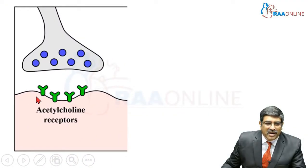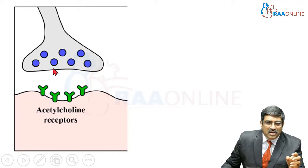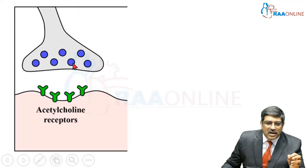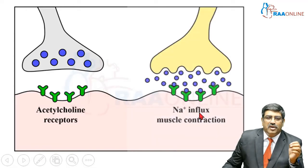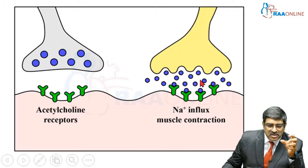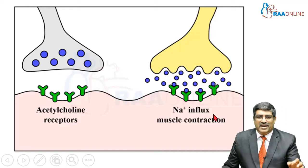This is the nerve fiber ending and this is the muscle membrane. The blue one is the acetylcholine which is released from the nerve fiber end, and the green one is the acetylcholine receptor. This acetylcholine has to be released and combined with the receptor for muscle contraction to happen. Here you can see the acetylcholine being released into the junction, combining with the acetylcholine receptor, and muscle contraction can happen.